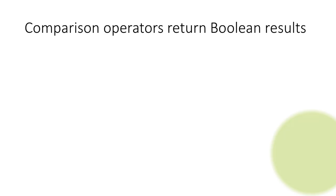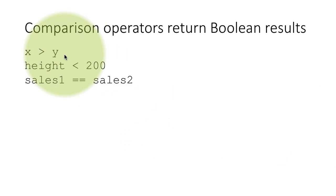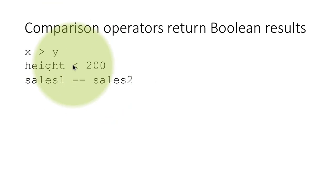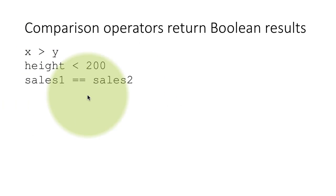Comparison operators return Boolean results because the result is either true or false. For example, x greater than y — depending on the values of x and y — this is either true or false. Height less than 200 — once again depending on the value of height this is either true or false. Assuming that there are two variables sales1 and sales2 both of which have some values, whether the two of them are equal or not depends on their values.